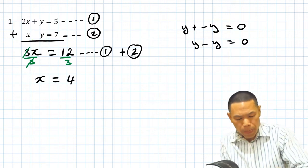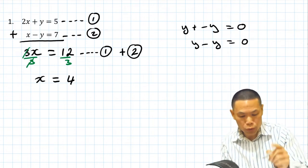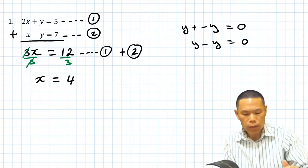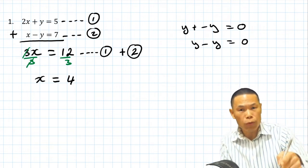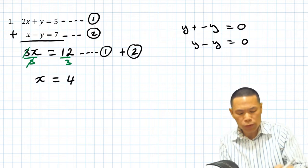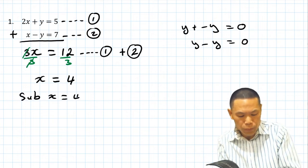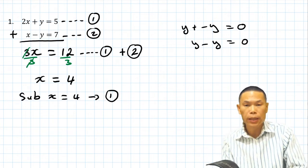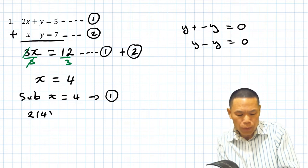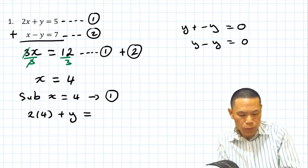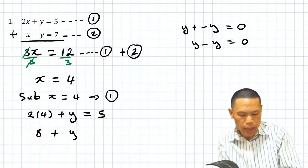Now to solve for y, we substitute x equals 4 into equation number one — or we could substitute into equation number two; either gives the same answer. Every time you see x, you replace it with 4. So 2 lots of x means 2 lots of 4. That gives 4 plus y equals 5, and 2 times 4 is 8, so 8 plus y equals 5.